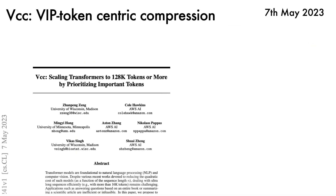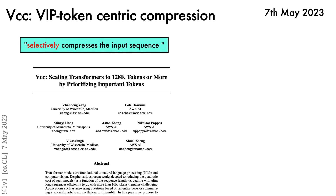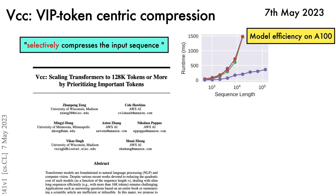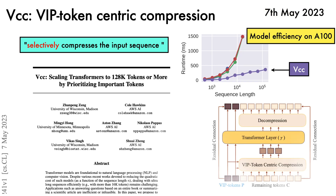A collaboration between the University of Wisconsin, University of Minnesota, and AWS AI has proposed a scheme that works by selectively compressing input sequences to transformer layers to scale transformers up to 128,000 tokens and beyond. Compared to baseline transformers and efficient self-attention schemes like Longformer, VCC remains fast at longer sequence lengths and also uses less memory. The key idea is to preserve the most important, or VIP tokens, and aggressively compress the rest before they are passed into a transformer layer.